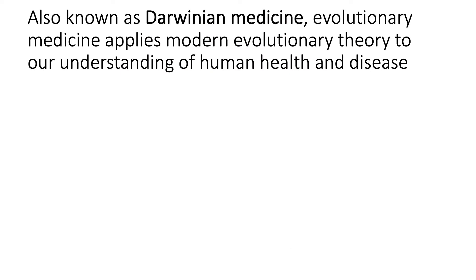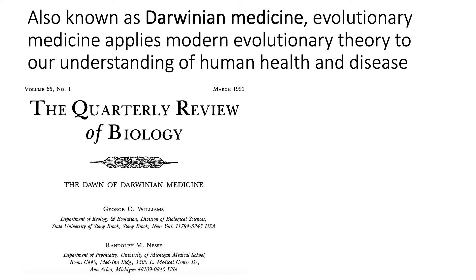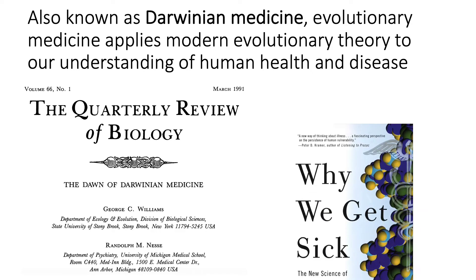Also known as Darwinian medicine, evolutionary medicine applies modern evolutionary theory to our understanding of human health and disease. In doing so, not only can we learn about how the biological mechanisms that underlie human health work, but we can also begin to learn about why certain diseases and disorders exist in the first place. This is a relatively recent perspective, largely pioneered by George Williams and Randolph Nesse in their 1991 paper, "The Dawn of Darwinian Medicine," and later in their follow-up 1996 classic, "Why We Get Sick."